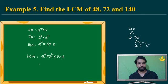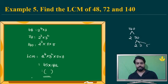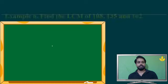So the LCM of 48, 72, and 140 is 2⁴ × 3² × 5 × 7. Multiplying these together gives the final answer — you can compute the product yourself to verify.